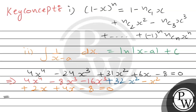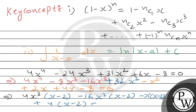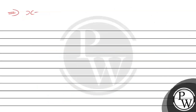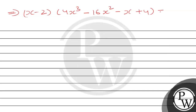This implies — from the first two terms, take 4x cube common to get (x minus 2); from the next two terms, take minus 16x square common to get (x minus 2); from the next two terms, take minus x common to get (x minus 2); from the last two terms, take 4 common to get (x minus 2). This equals 0, which implies (x minus 2) multiplied by (4x cubed minus 16x squared minus x plus 4) equals 0.